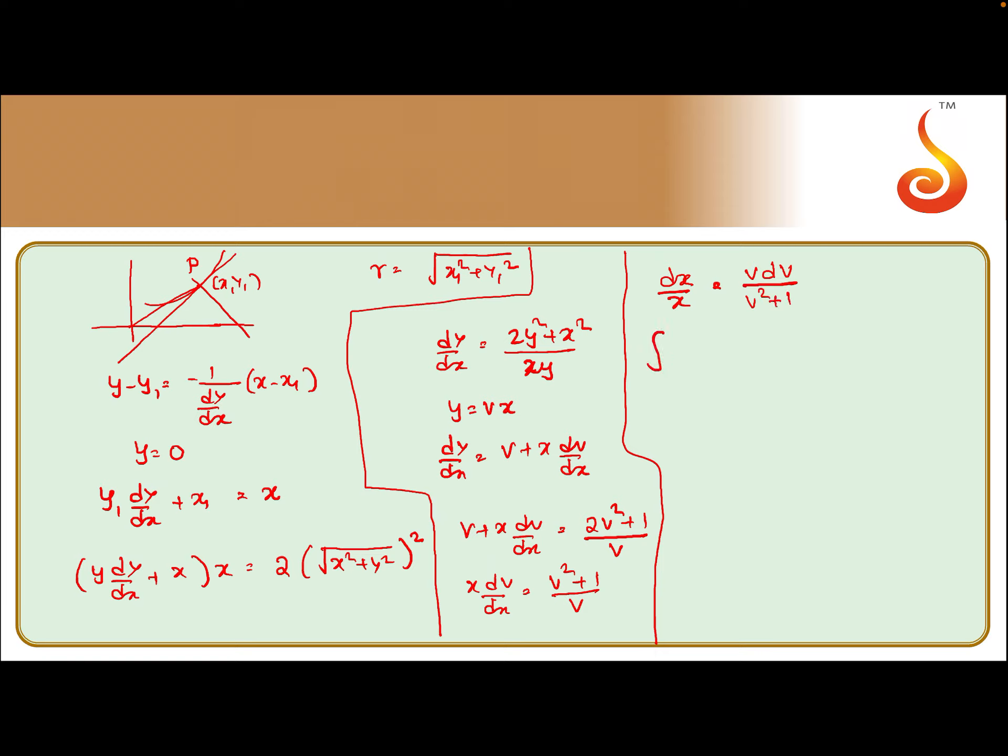Integrate both sides: ∫dx/x = ∫v dv/(v² + 1). This will give you ln(x) = (1/2)ln(v² + 1), so we can put ln(c).